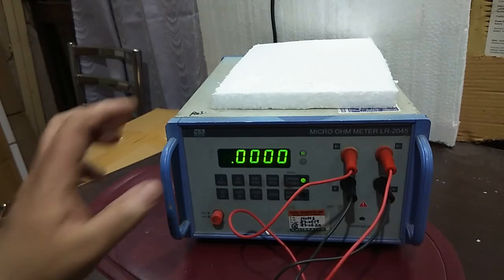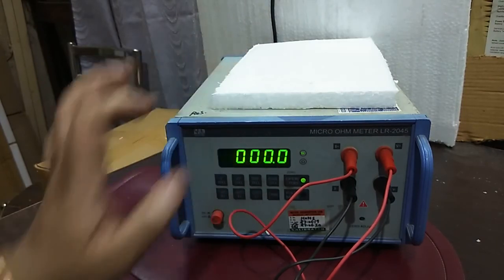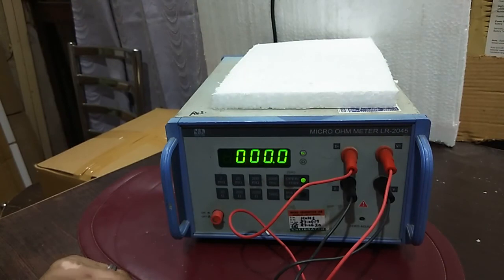Yes it is now zero. So in all ranges now you can see the zero is there and by this you can set zero in Motwani make micro-ohm meter.